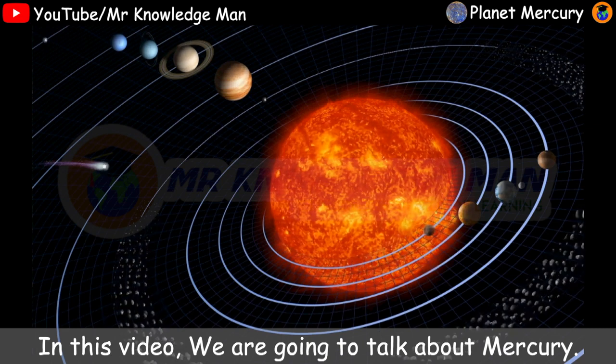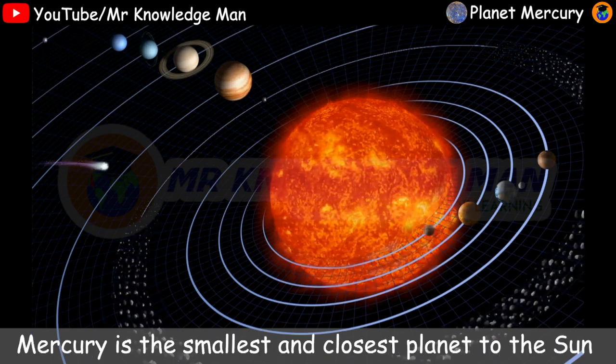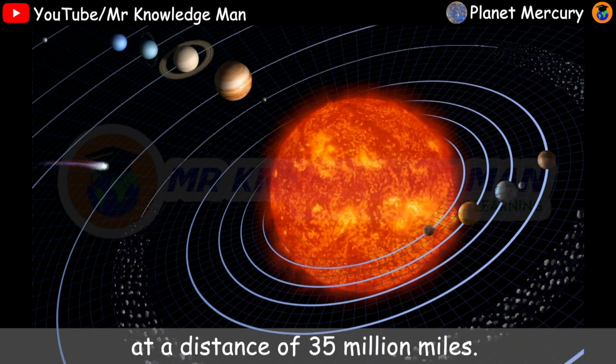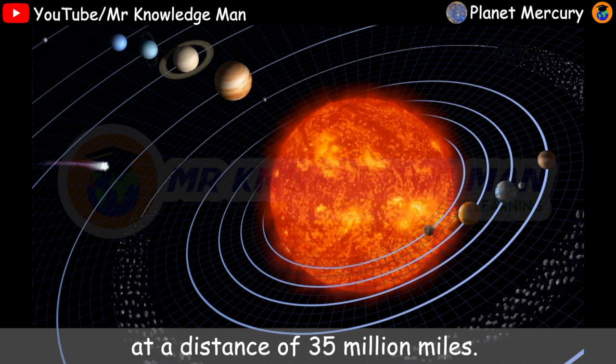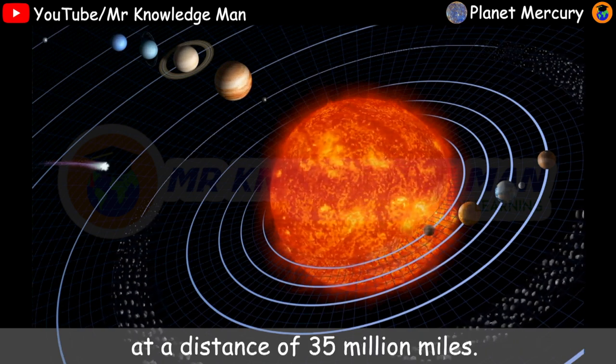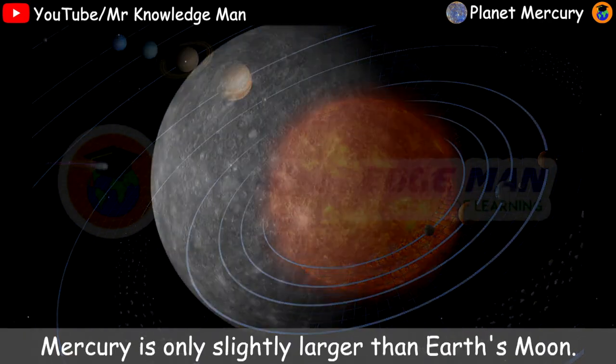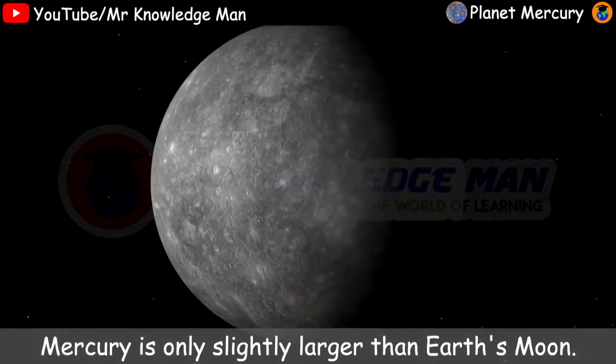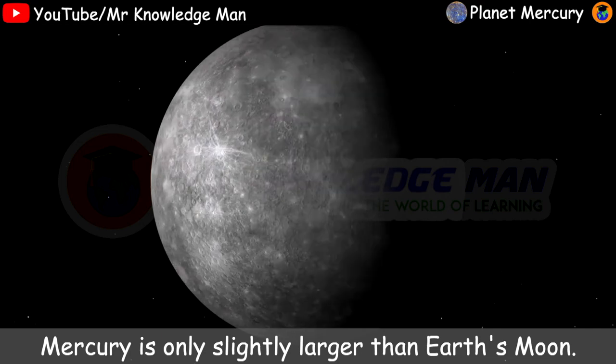we're going to talk about Mercury. Mercury is the smallest and closest planet to the sun at a distance of 35 million miles. Mercury is only slightly larger than Earth's moon.